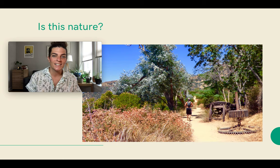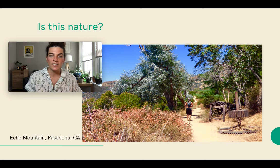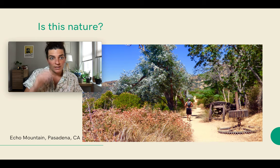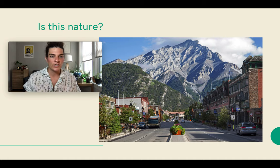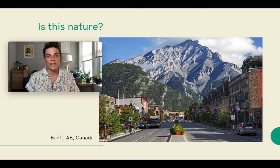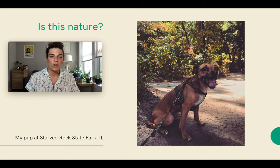Depicting, in your estimation, nature? For those of you who have been to Southern California, this is the peak of what's referred to as Echo Mountain. There was once a very grand, expensive hotel at the top, which burned to the ground about five years after it was built. So this sort of mountainous scene — would you say this is nature? Yes or no? And this is, of course, Banff in the province of Alberta, Canada. How about my hot, panting pup at Starved Rock State Park, Illinois? Would you say that this is nature?